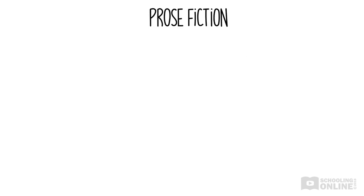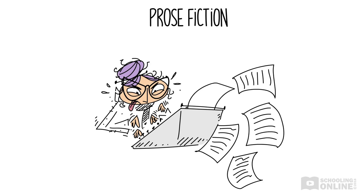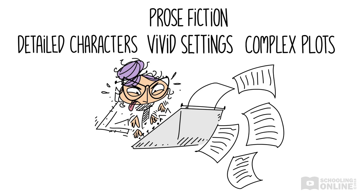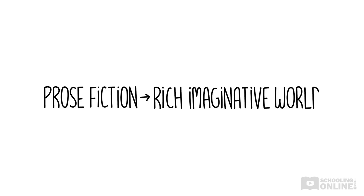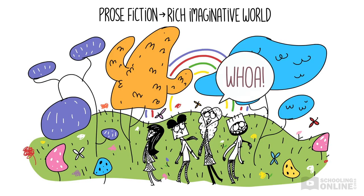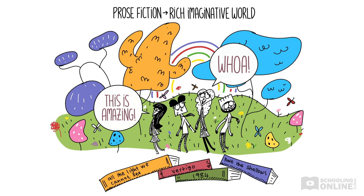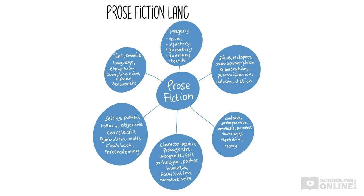Prose Fiction authors create detailed characters, vivid settings and complex plots. It's a great form for immersing a reader in a rich, imaginative world, compelling us to reflect on the vast variety of human experiences and responses. Check out our lessons on All the Light We Cannot See, Vertigo, 1984 and Past the Shallows, and our Stage 6 English Essentials series, Powering Through Prose, to get greater insights.